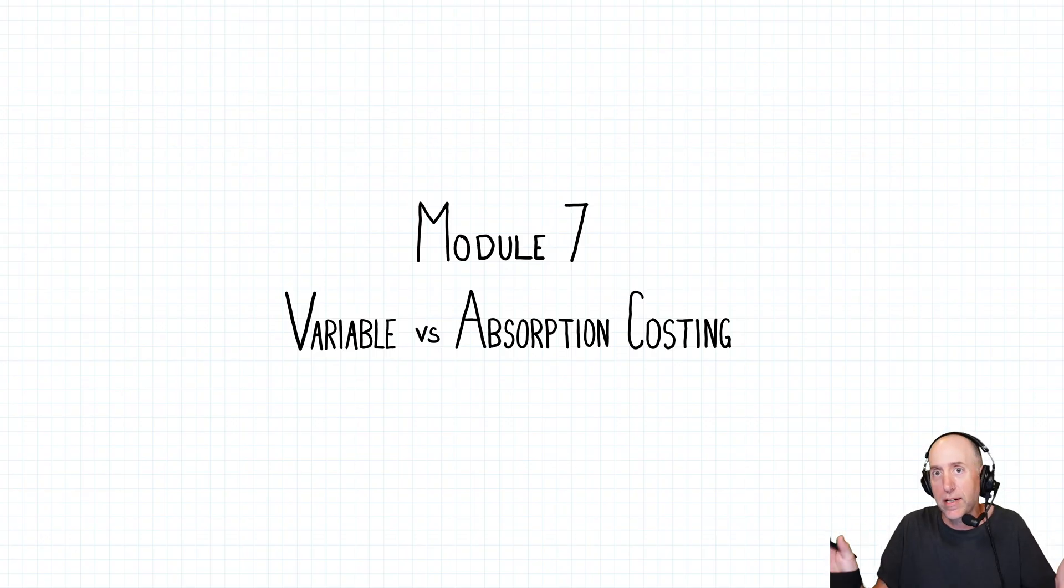It combines what we've already discussed about the product cost - material, labor, and overhead - and what we've added to that in recent chapters, which is variable versus fixed cost.